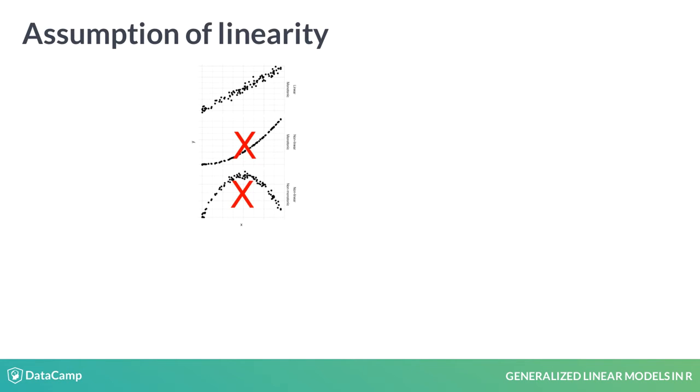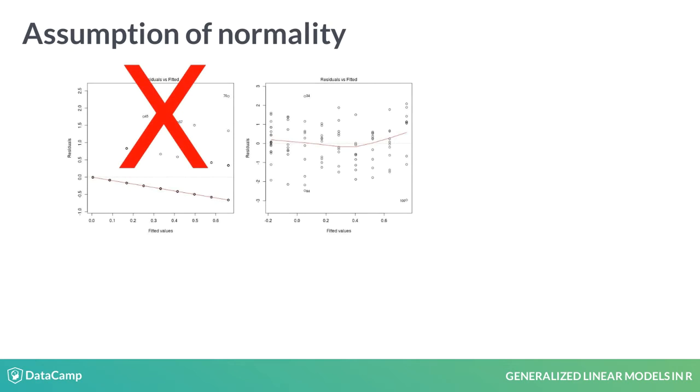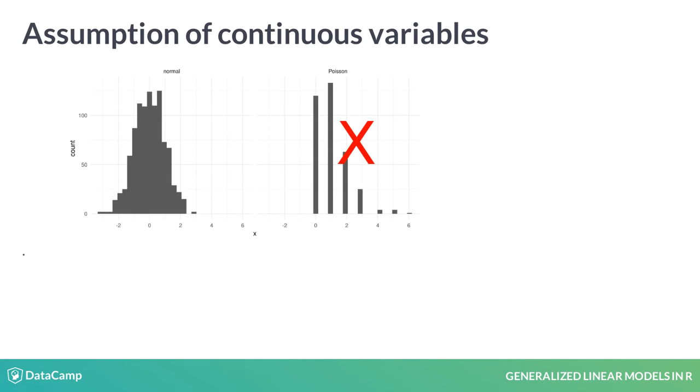Linear models have important assumptions. By definition, the model examines linear relationships, such as the top example plot. Additionally, linear models assume residuals are normally distributed, such as the right plot. Furthermore, linear models work best with continuous response variables, such as data on the left. However, in real life, many data sets do not meet these assumptions.